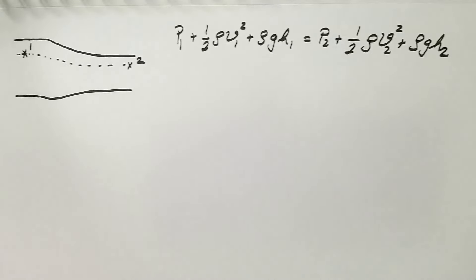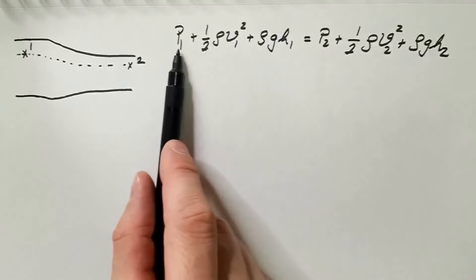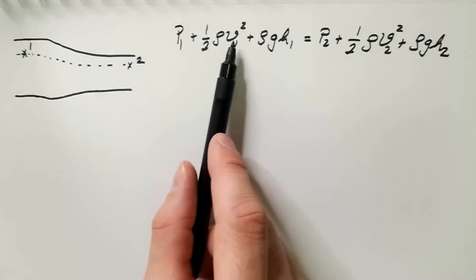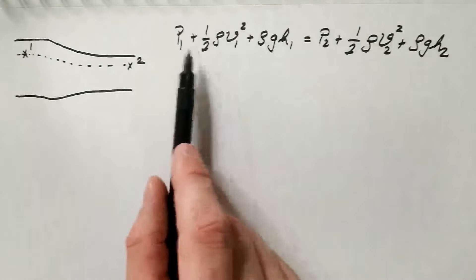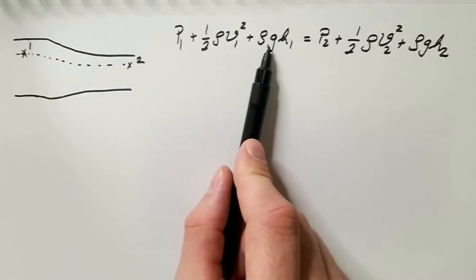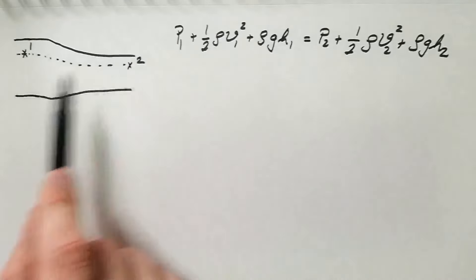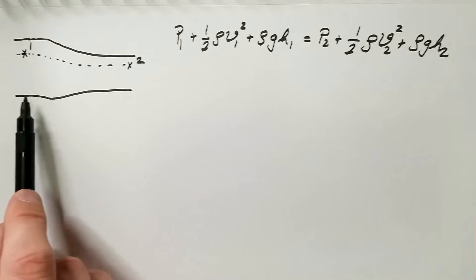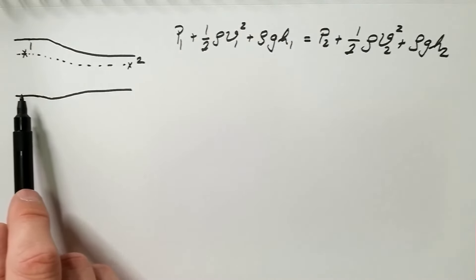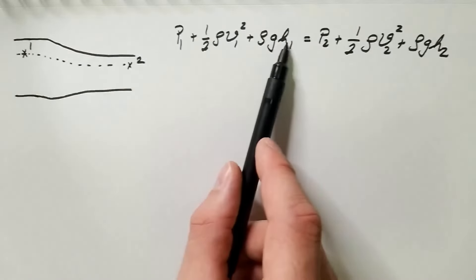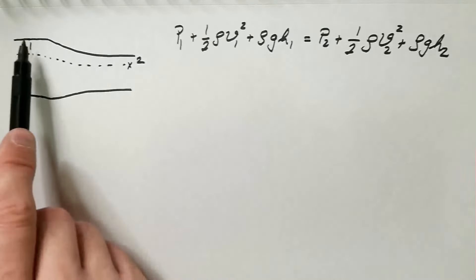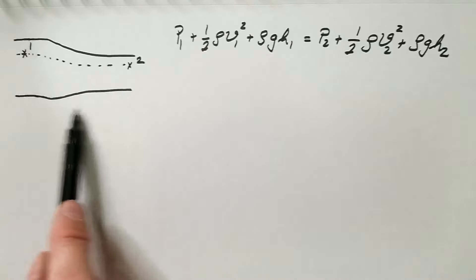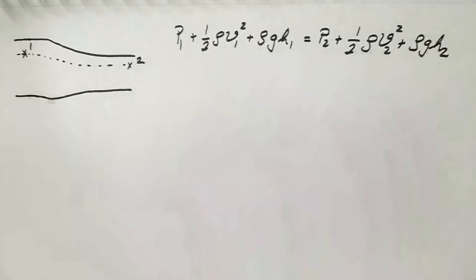Bernoulli's equation says that the total energy in the flow at point one has to be equal to the total energy in the flow at point two. Mathematically, we express this as: P1 + ½ρV1² + ρgH1 = P2 + ½ρV2² + ρgH2. Here, P is pressure, ρ is density, V is velocity at point one or two, g is gravitational acceleration, and H is height measured to some reference height — which can be anything as long as the same reference is used to measure H1 and H2.